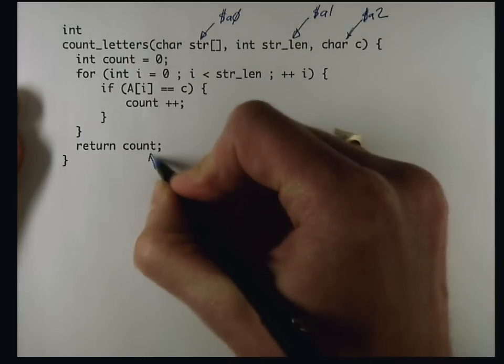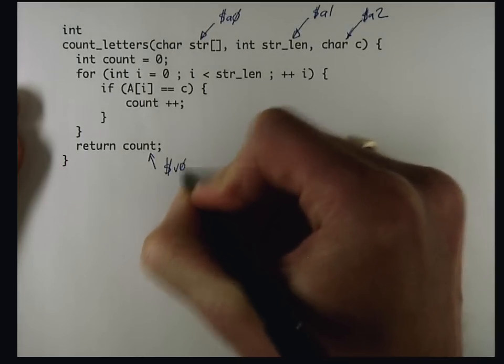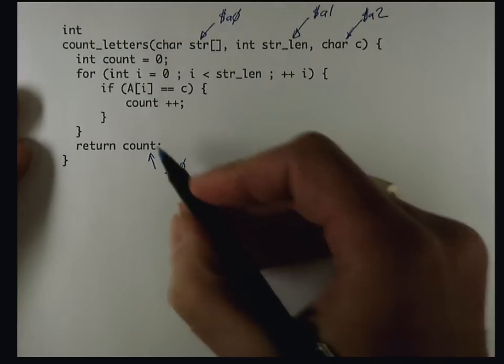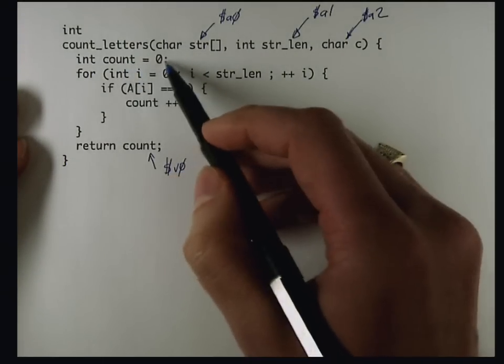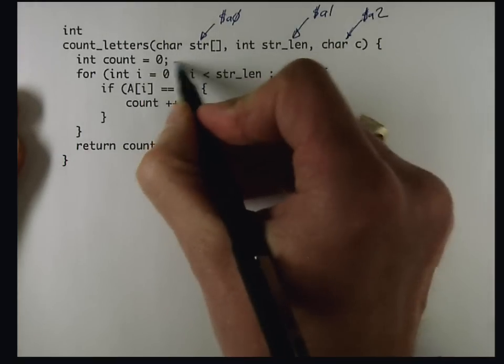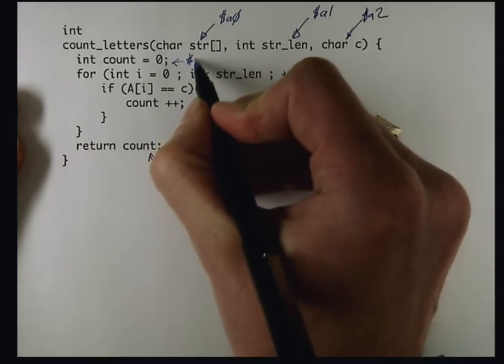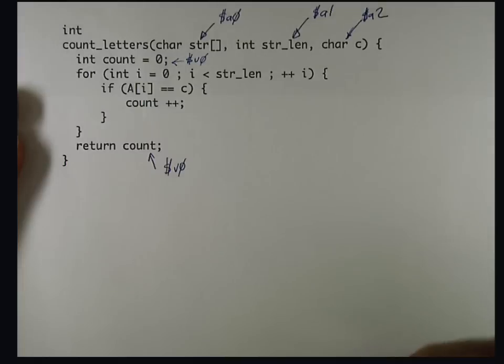The return value is going to be passed through V0, which means rather than allocate count to some register and have to copy it at the end, I'm going to go ahead and allocate it to V0 from the get-go.